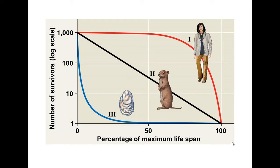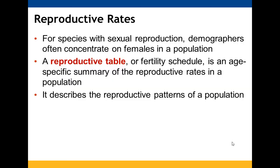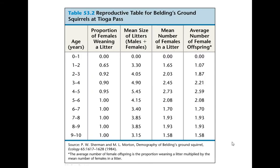Females play a key role in examining reproductive rates since they carry or provide the egg or embryo that produces offspring. A reproductive table gives age-specific summaries of reproductive rates — when and at what ages reproduction occurs — and describes reproductive patterns in the population. For Belding's ground squirrels, from zero to one year no litters were weaned, but from one to two years over half were weaning litters, and 90 percent or more were weaning litters between two and five years of age.